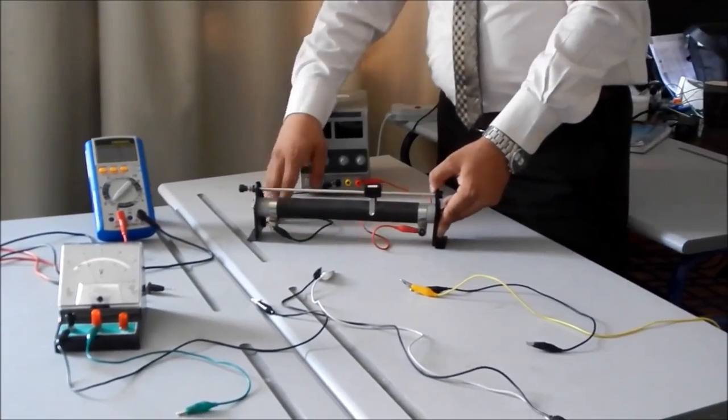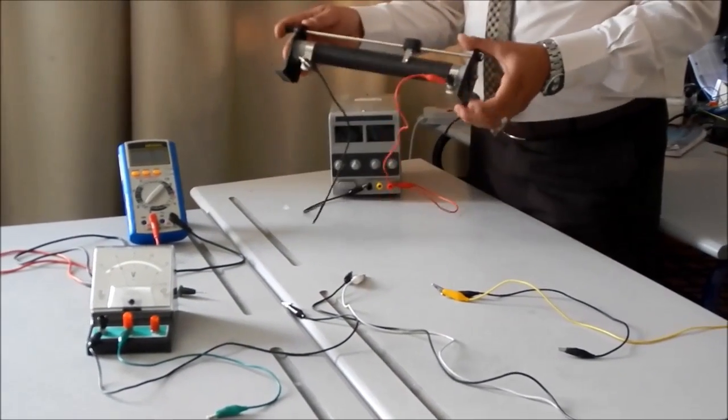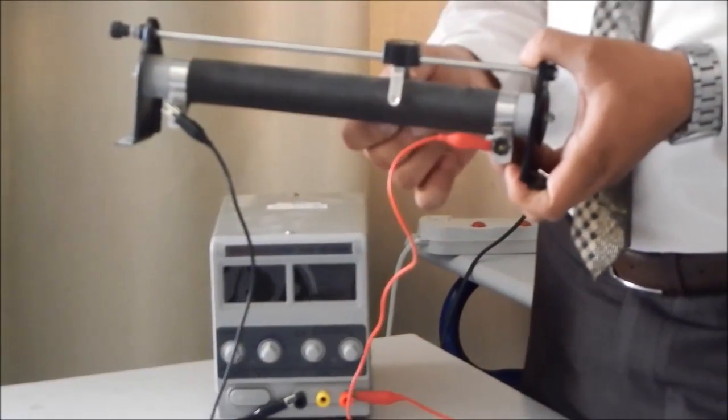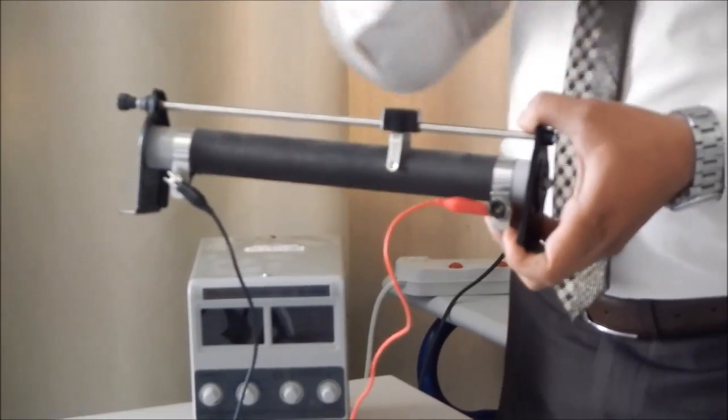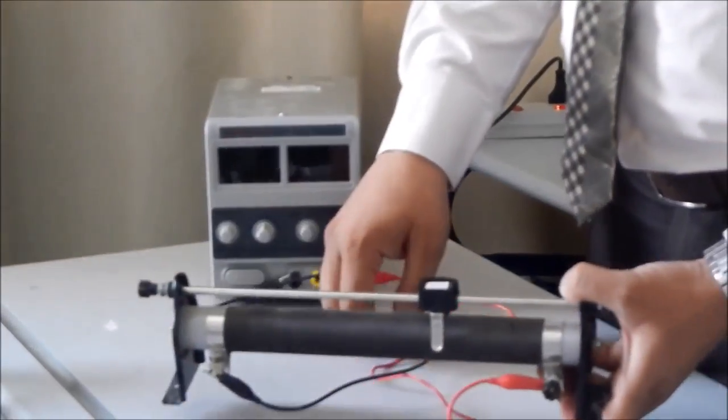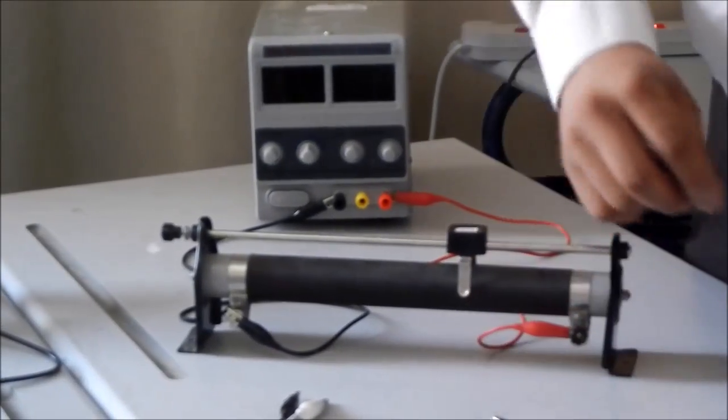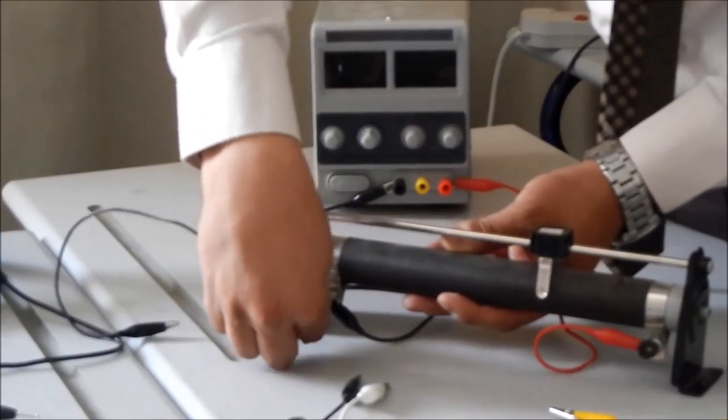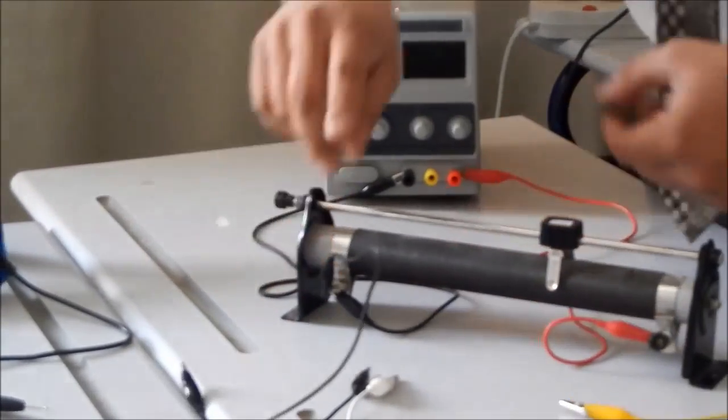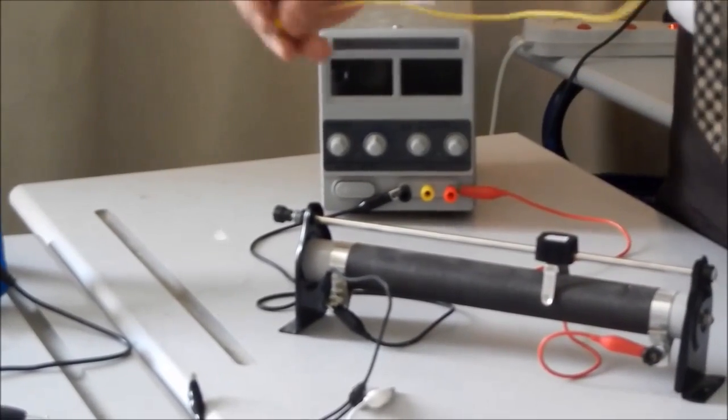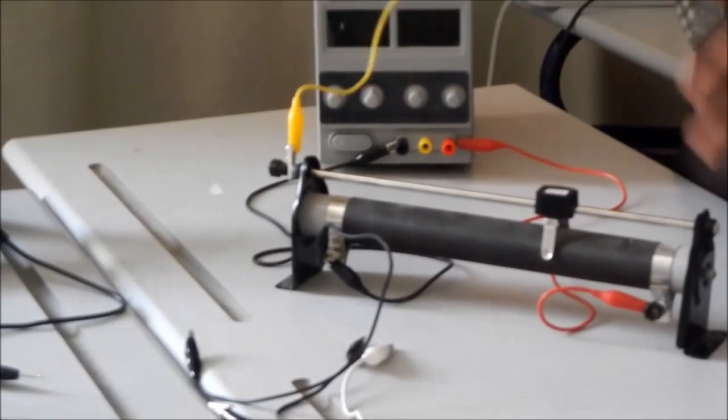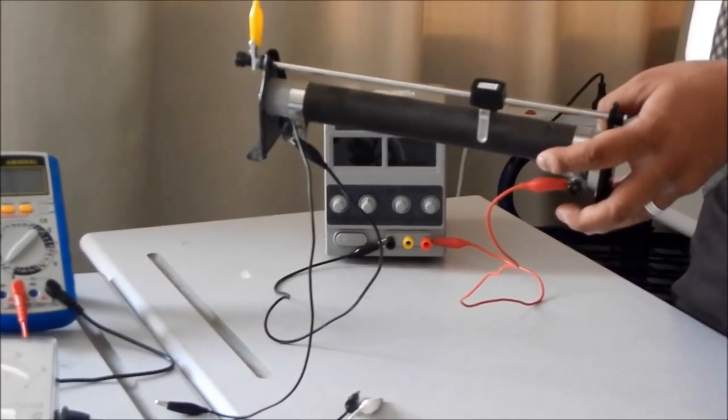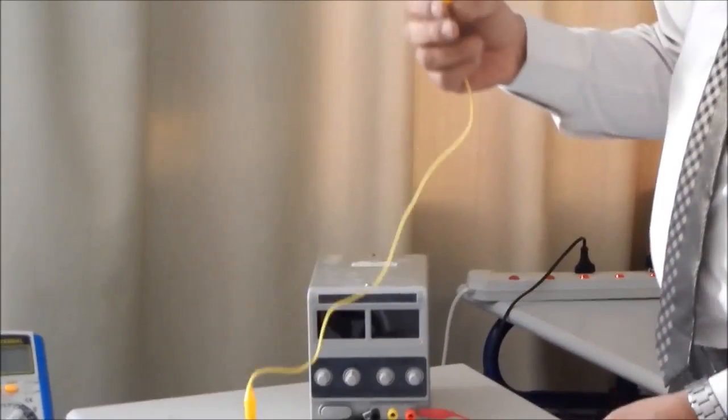First, we need to connect the rheostat as a potentiometer. We need to have by connecting the two points of the wire that is wound on the cylinder from the two points. Then, the third one will be connected to one of these. For example, we will connect this one. And the slider of the rheostat will be connected with this one. Here, from this connection, we are connecting this yellow wire as the positive pole.